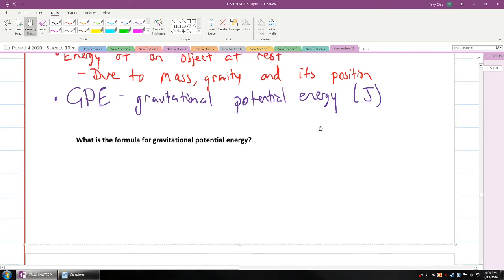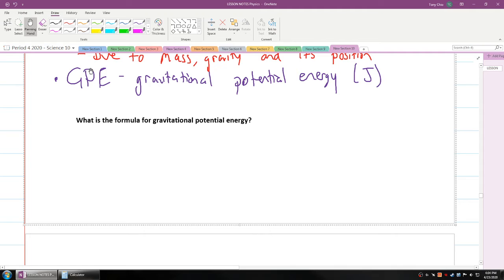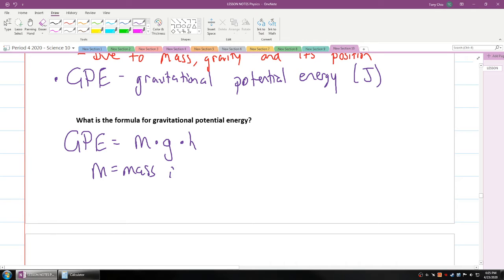So what is the formula of gravitational potential energy? Well, because it depends on mass, gravity, and height, the position of it, GPE can be found by multiplying mass times gravity times height. Where M is the mass in kilograms, gravity is 9.81 meters per second squared, it's acceleration, and height is the height in meters.